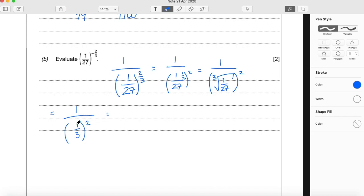1/3 squared. 1 times 1 is just 1. 3 times 3 times 3 is 9.